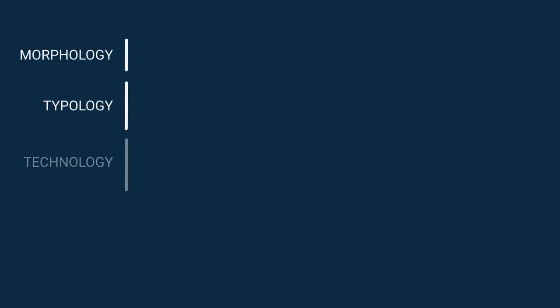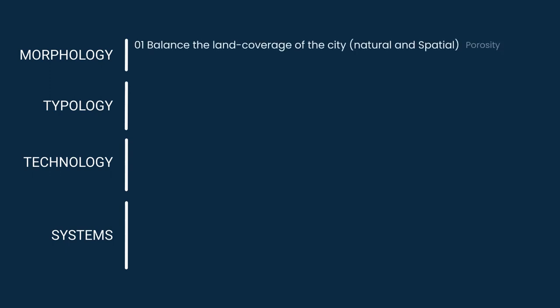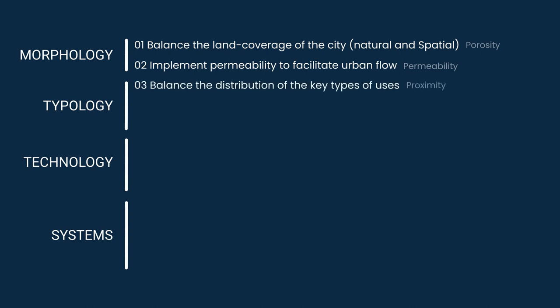DOP are grouped into four categories: morphological, typological, technological, and urban support systems. The first DOP considers the built environment as an ecosystem made of natural and artificial spatial elements and seeks a balance in the land cover. Identifying local parameters for spatial balance is vital for many important design decisions. The next principle aims at improving the urban flow and advocates for permeability. A permeable void system can highly influence the movement within the neighborhoods and their social characteristics. The third DOP is all about mixed-use development and encourages an efficient distribution of different types of uses. A strategic mixture of uses increases the self-sufficiency of areas and shortens the distances between destination points, paving the way for healthier modes of transportation.